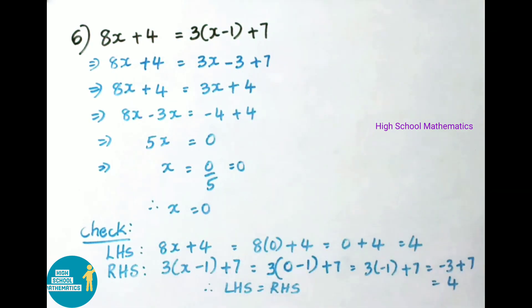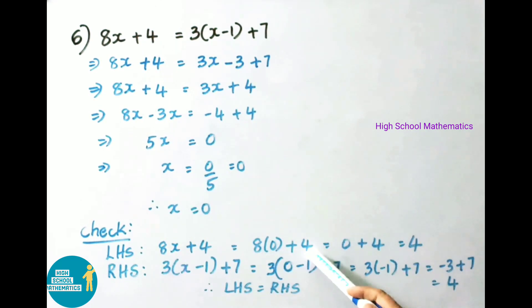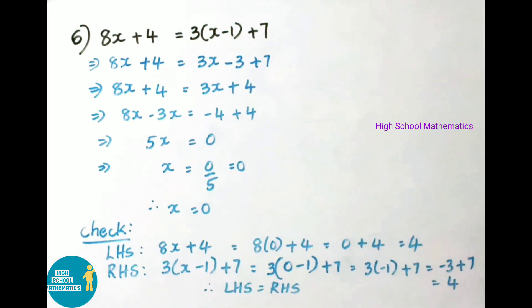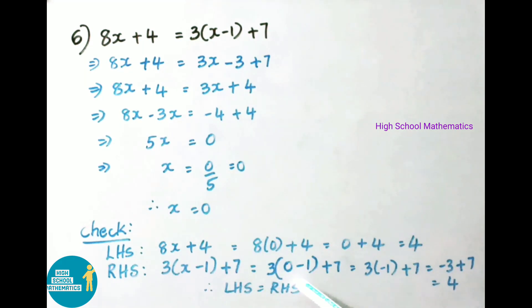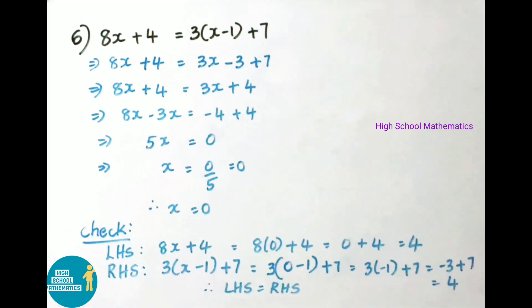Check: LHS is 8X + 4 = 8 × 0 + 4 = 0 + 4 = 4. RHS is 3(X − 1) + 7 = 3(0 − 1) + 7 = 3 × (−1) + 7 = −3 + 7 = 4. Therefore LHS = RHS.